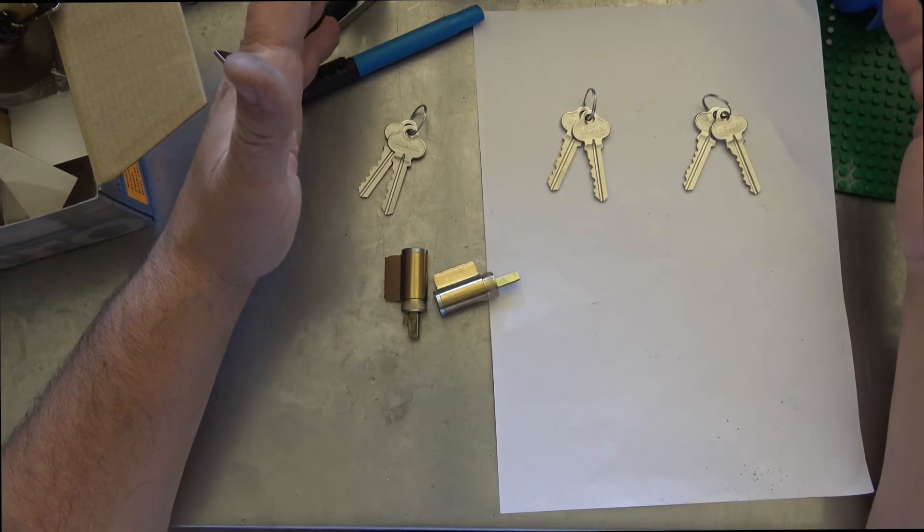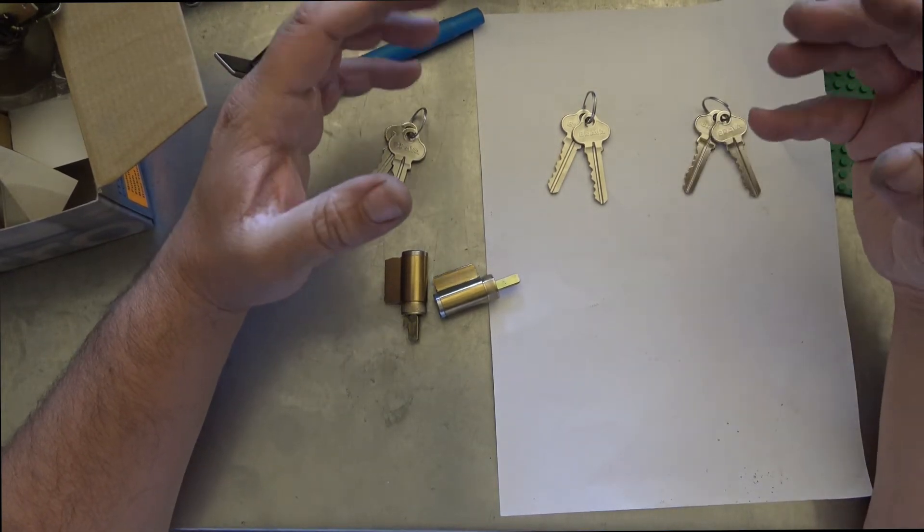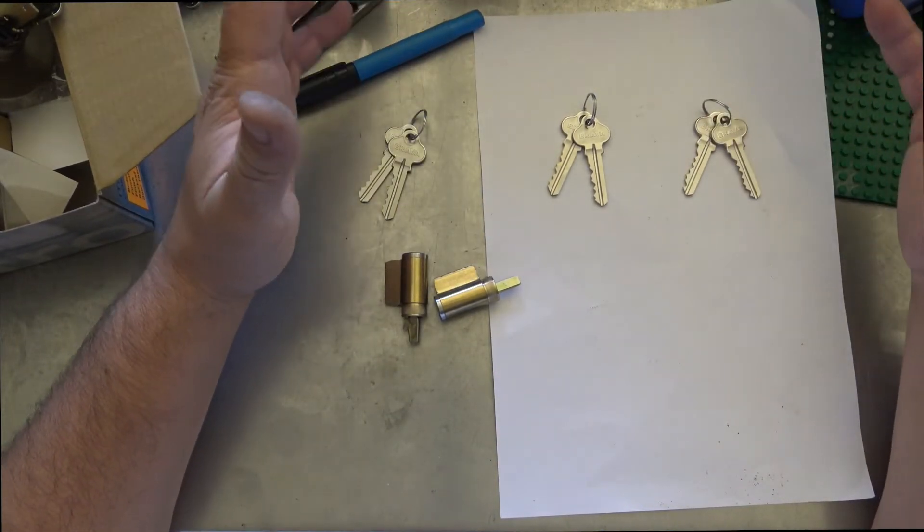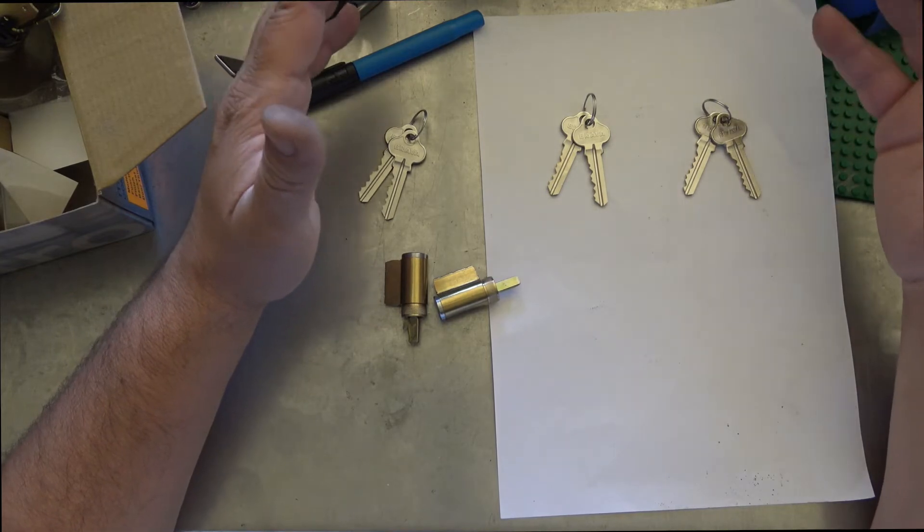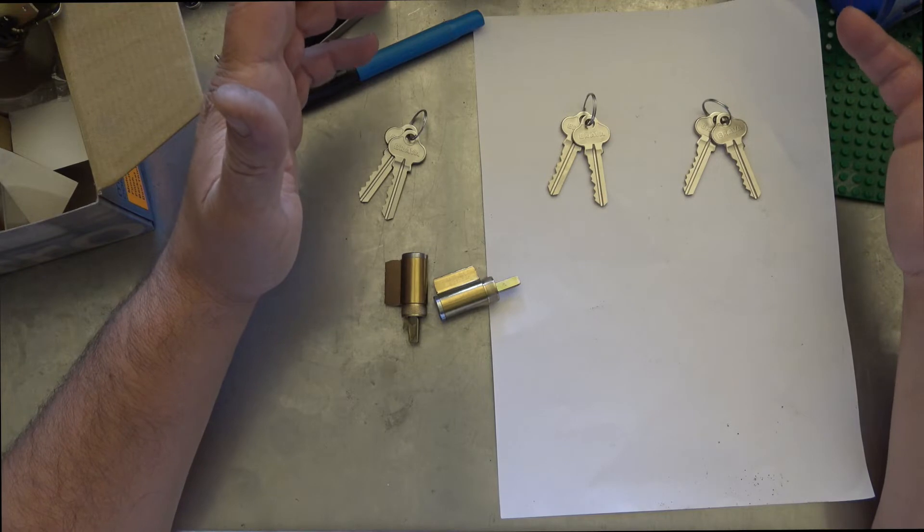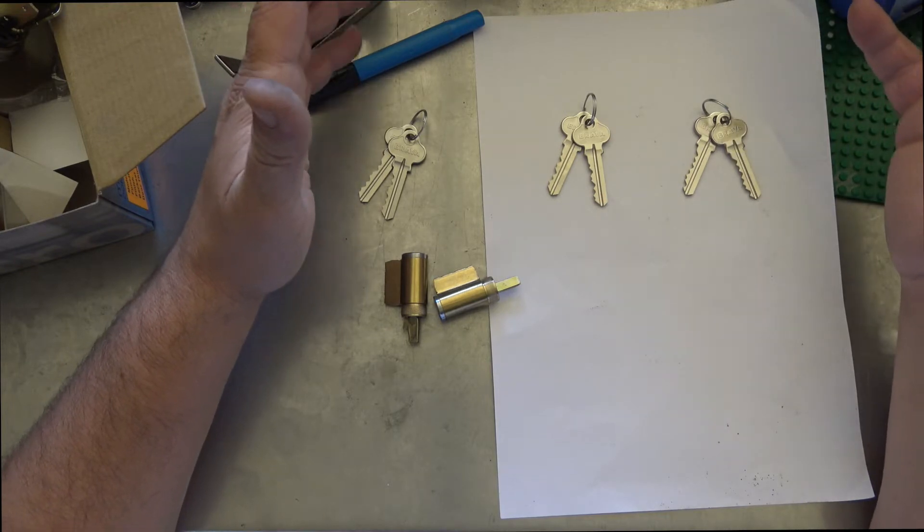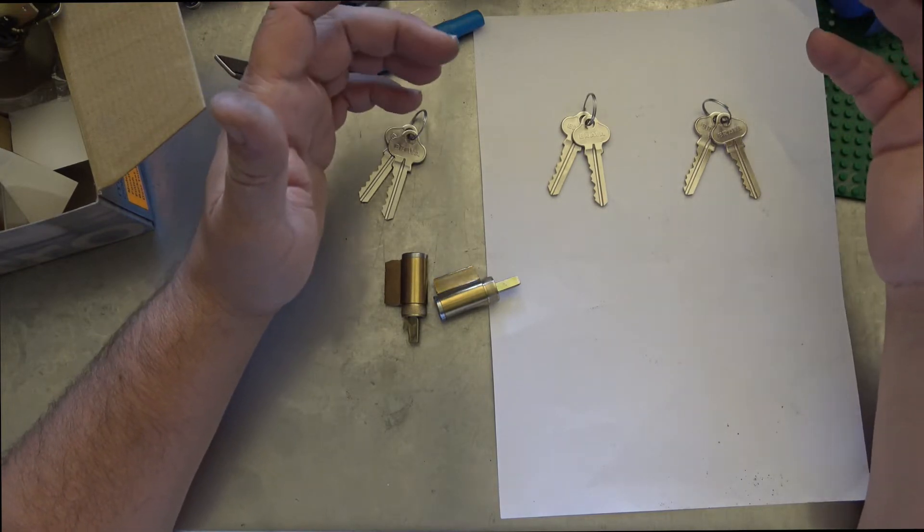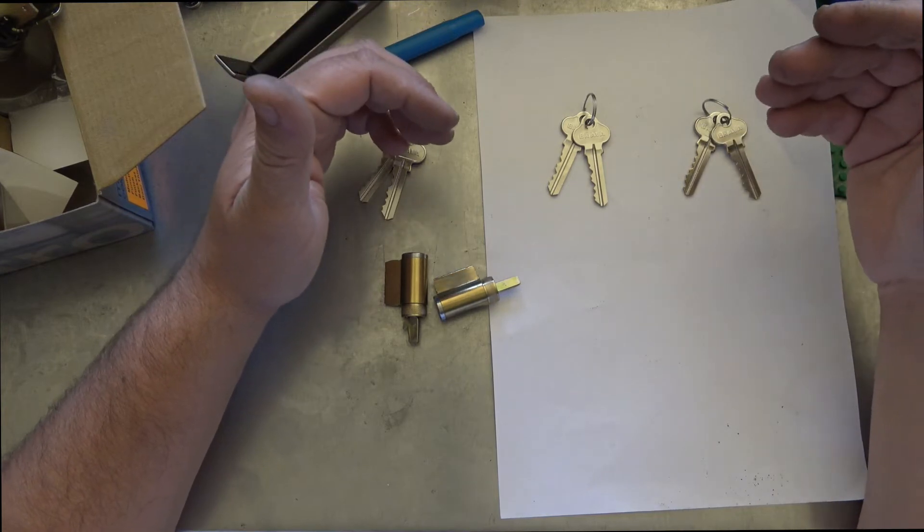Now the customer wants them all to be matching, and normally we give two keys with three or five or ten locks if they're keyed alike. But in this particular scenario it would be nicer to give the customer the extra keys so they can have two keys per lock, allowing them to have more keys. They did come with a lock but the problem is they're all different keys.